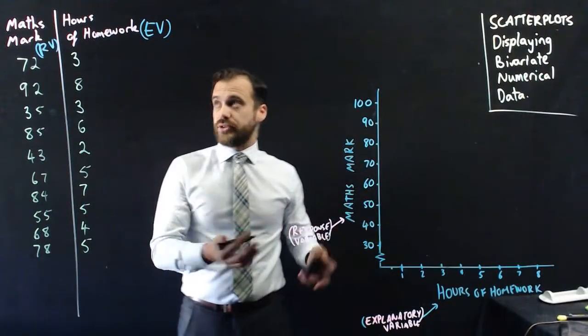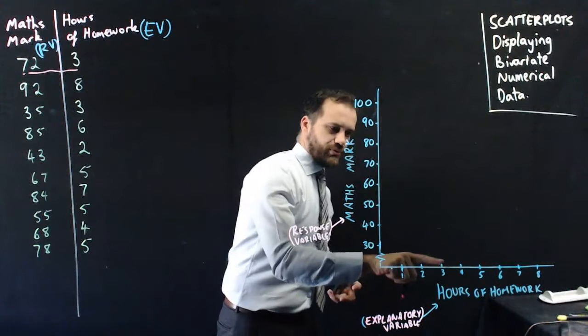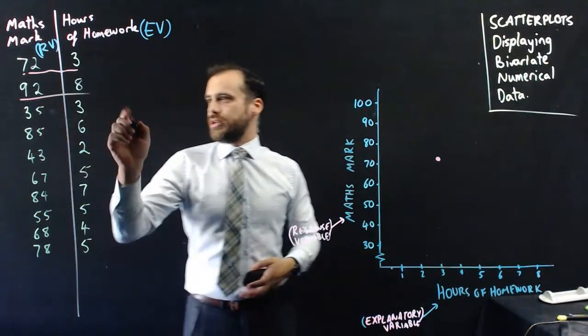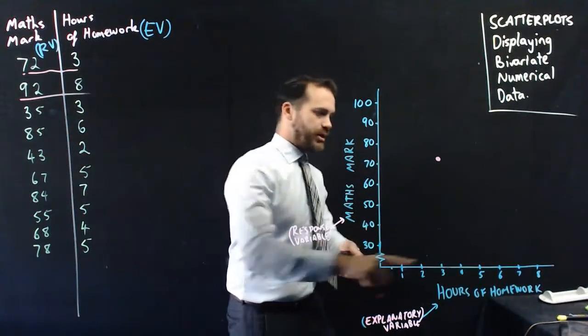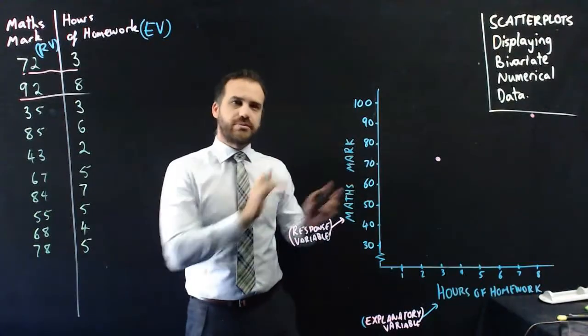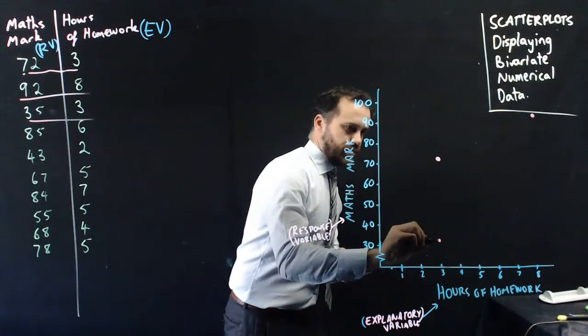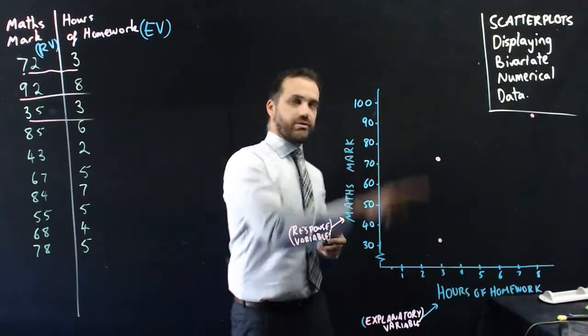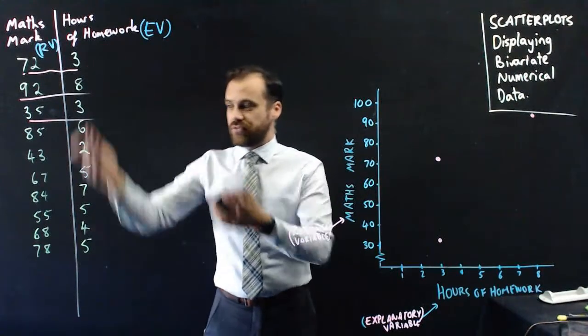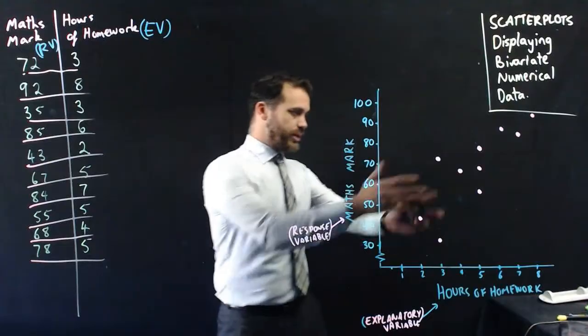So now that we've done that, it's just a matter of placing our dots. So we look at our first student here, 3, 72. So that means they've done 3 hours of homework, and they've got a mark of 72, and we just put a dot there. 92 and 8, 8 hours of work, 92 mark, right over here. Obviously, you'll probably have some graph paper or something, so you can be more accurate. I'm going to place one more dot here, 3, 35. Now, you can see these two dots are directly below each other. It doesn't matter. We can put as many directly below each other. We just follow the data, we just fill it all in. I'm going to keep filling this stuff in. That's it. I'm pretty much done here. You can see I've got my dots here.